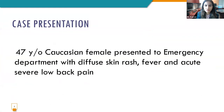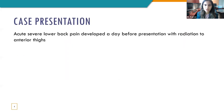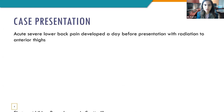We had a 47-year-old Caucasian female who presented to the ER with diffuse skin rash, fever, and acute severe low back pain. Her diffuse skin rash was an erythematous maculopapular rash with fever cycles, which started six days before her presentation. It started on her back and then spread to her arms, chest, abdomen, and progressed to bilateral arms and legs. It spared palms and soles, and there were no oral lesions. They were extremely itchy. She received methylprednisolone from her PCP a week ago, which had no effect. One day before presentation she had a fever spike of 102°F and developed acute severe low back pain radiating to her anterior thighs.